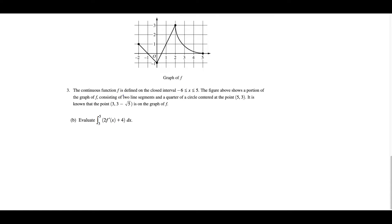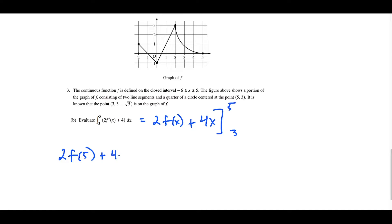For part B, we use the fundamental theorem of calculus approach to evaluating definite integrals. The antiderivative of 2 times f prime of x is 2 times f of x, plus the antiderivative of 4 is 4x. This is evaluated from x equals 3 to x equals 5. Plugging in, we get 2 times f of 5 plus 4 times 5 minus the quantity 2 times f of 3 plus 4 times 3.